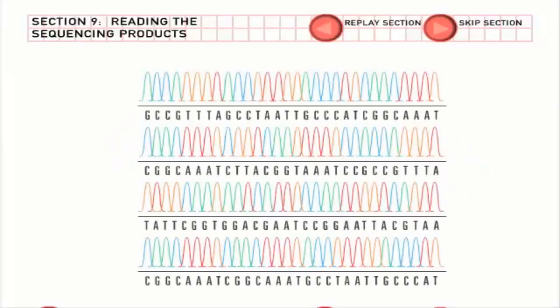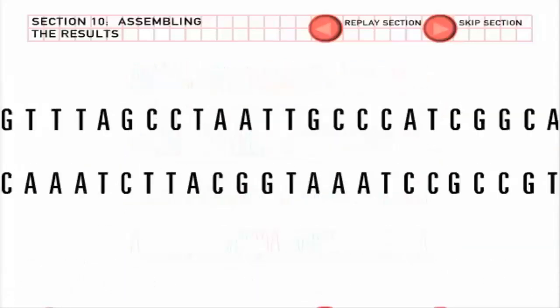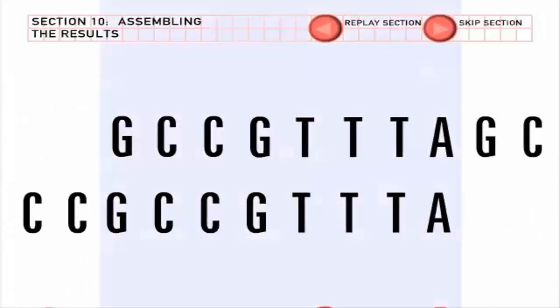A single sequencing reaction reveals the sequence of a few hundred letters of DNA. A computer program helps integrate the information from individual sequencing reactions. It spots where fragments overlap to puzzle the pieces back together.